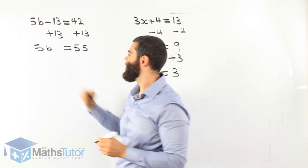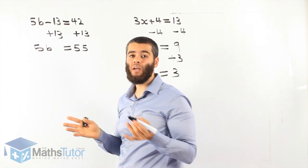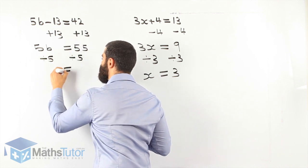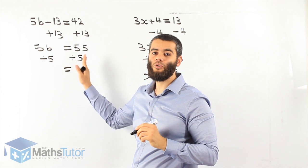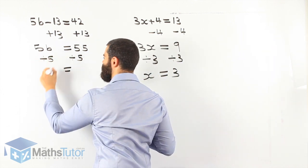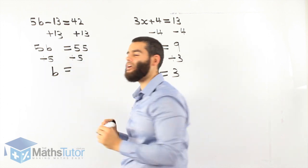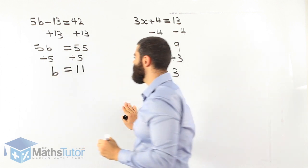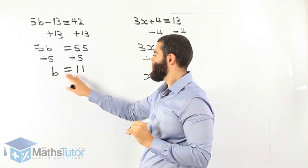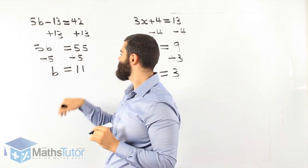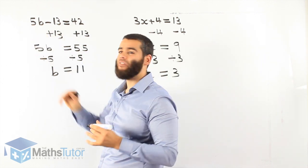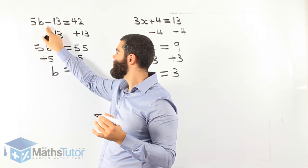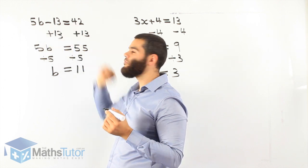What do we do now? We divide because 5b is 5 times b, so divide by 5 and divide by 5 on the other side. Remember, what we do to one side we do to the other. 5 divided by 5 leaves us with 1b. 55 divided by 5 is simply 11. So b equals 11. Let's check: 5 times b — we're saying b is 11 — so 5 times 11 is 55. 55 take away 13 is 42. It works!